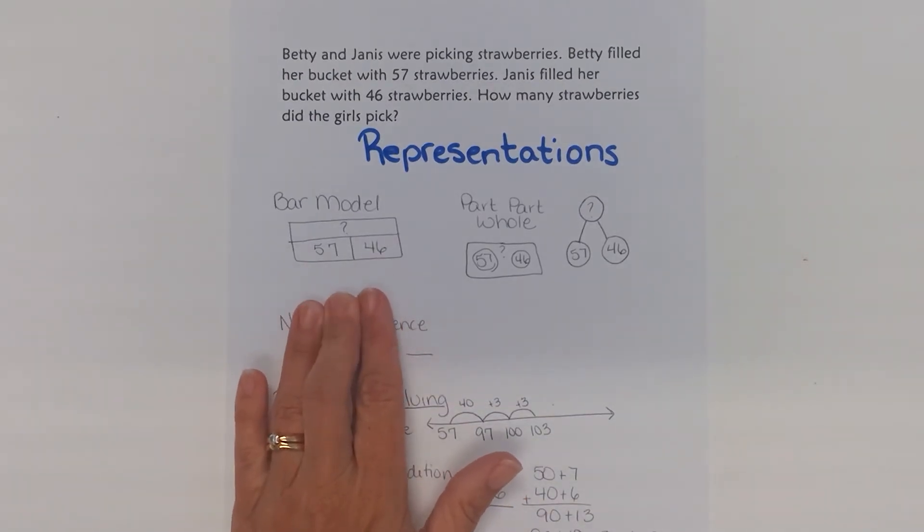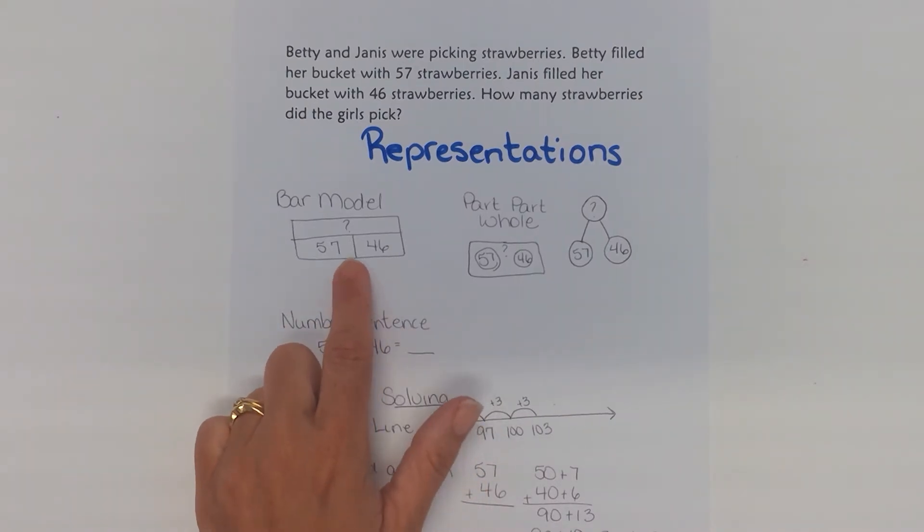One thing about the bar model that we want the students to understand is that we don't as teachers want to always model that bar being right in the middle. Notice this is a little bit off to the side so that the students don't see these as equal pieces. Equal pieces insinuates multiplication and these are not equal 57 and 46. So the bar models are one way.